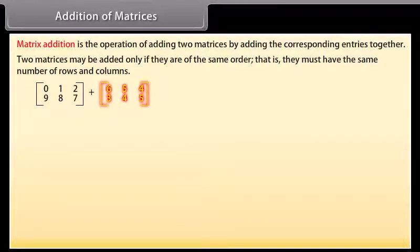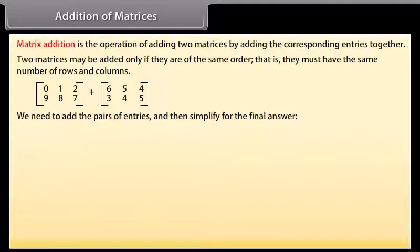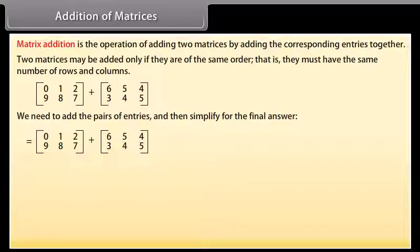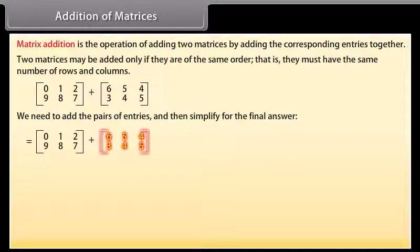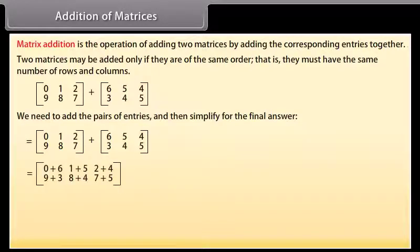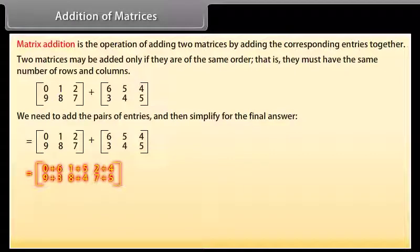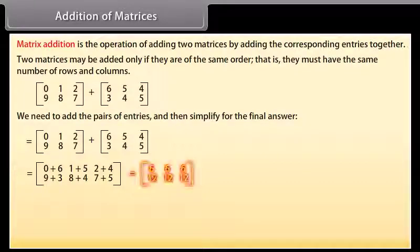Let's add these matrices. We add the pairs of entries and simplify. The first matrix has rows [0, 1, 2] and [9, 8, 7]. The second matrix has rows [6, 5, 4] and [3, 4, 5]. Adding corresponding entries: row 1 gives [0+6, 1+5, 2+4] and row 2 gives [9+3, 8+4, 7+5], which equals rows [6, 6, 6] and [12, 12, 12].